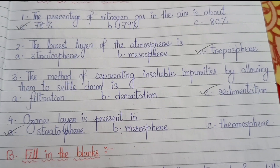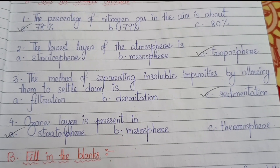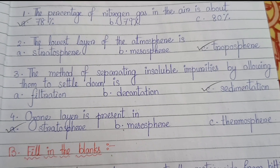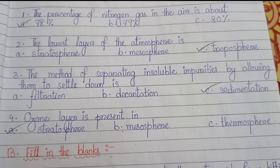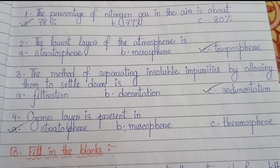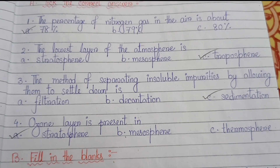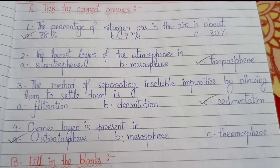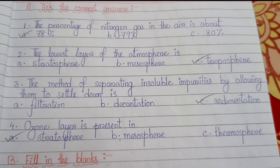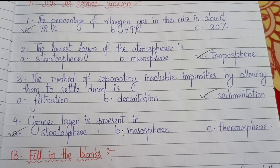Number 3: the method of separating insoluble impurities by allowing them to settle down is (a) filtration, (b) decantation, (c) sedimentation. The answer is (c) sedimentation.